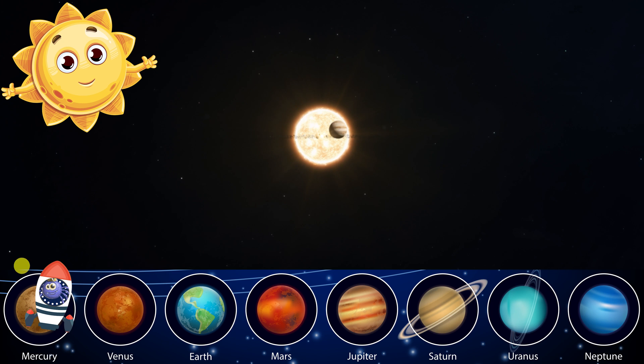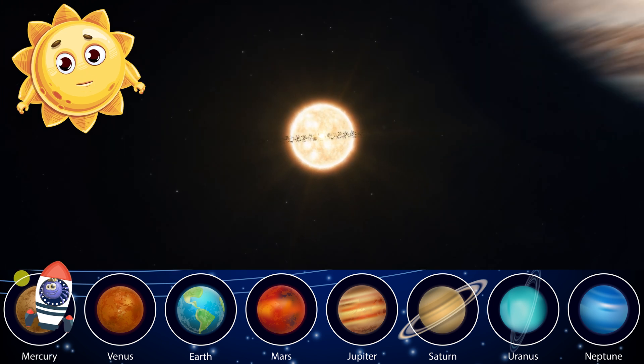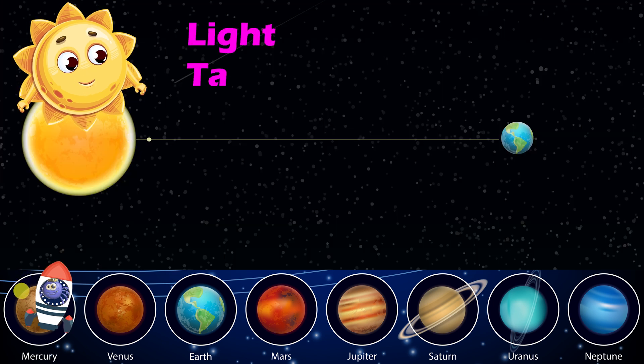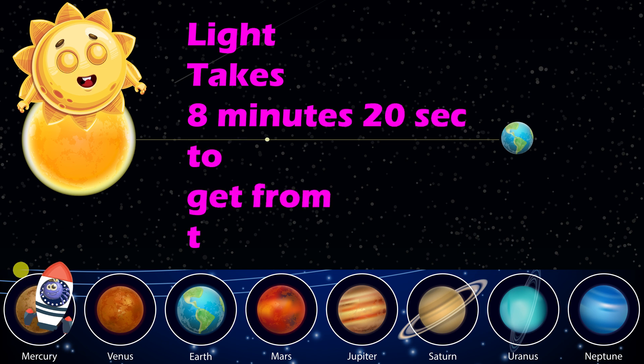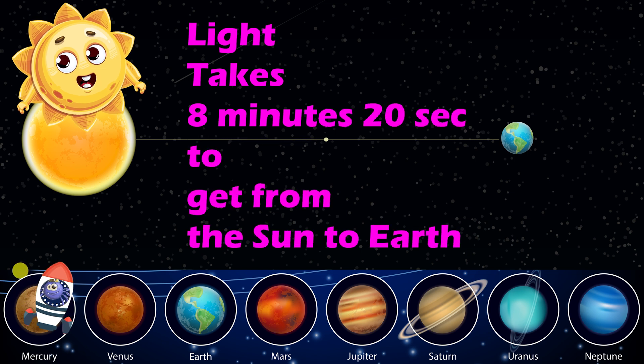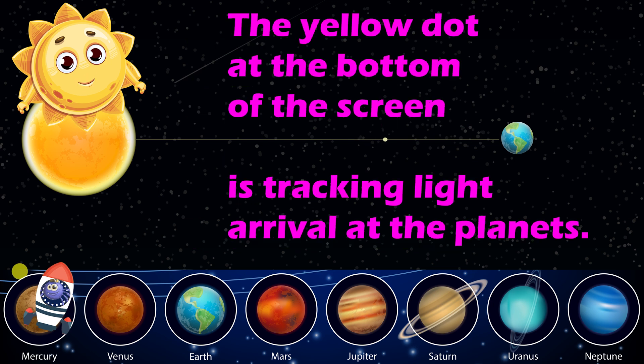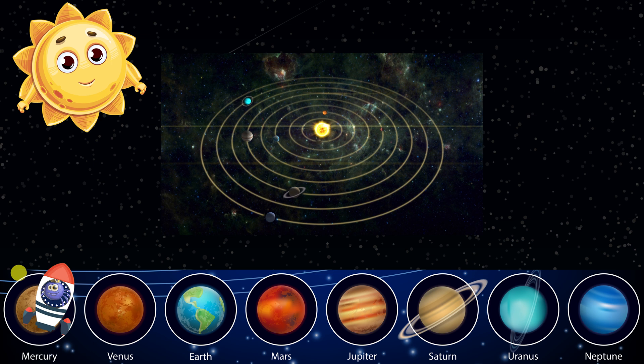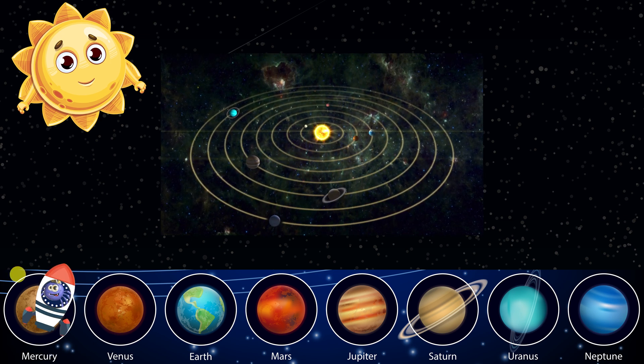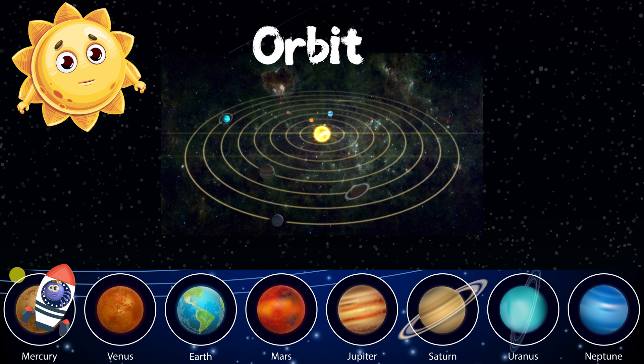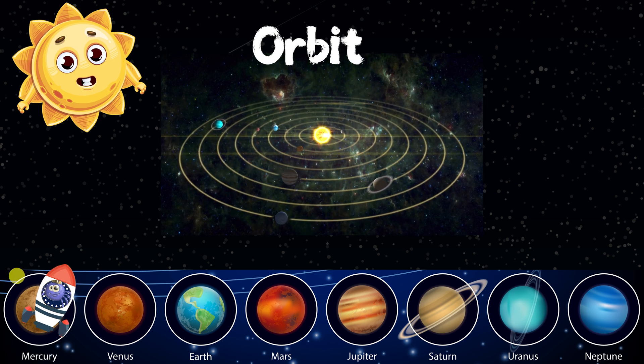The solar system is very big, and it would take you a long time to travel from one end to the other. It takes light about eight minutes to reach Earth from me. My light takes more than four hours to reach the dwarf planet Pluto, and light is the fastest thing in the universe. I don't know about that. I'm pretty fast. So, what is an orbit? An orbit is the path that an object in space takes around another object.